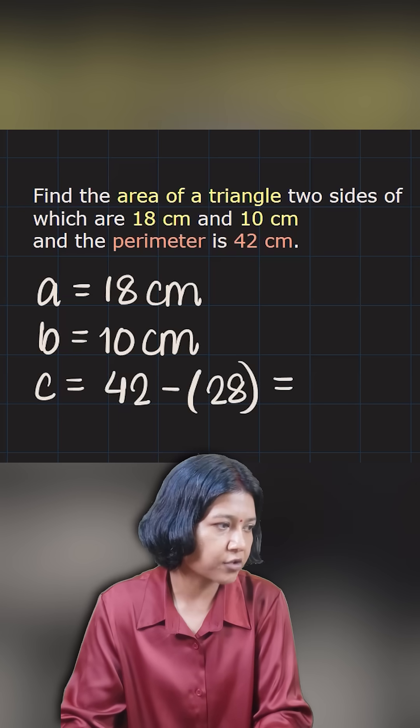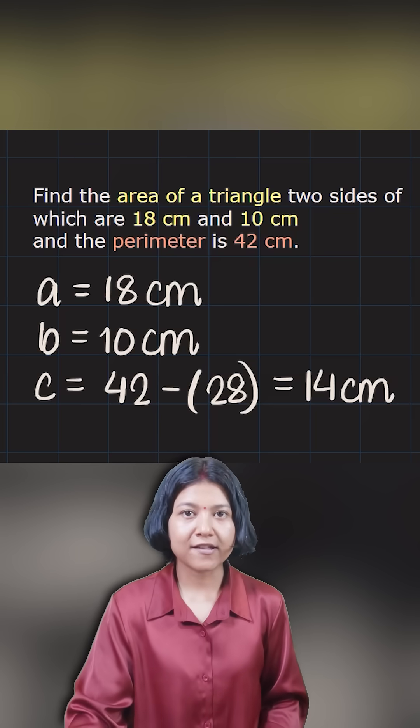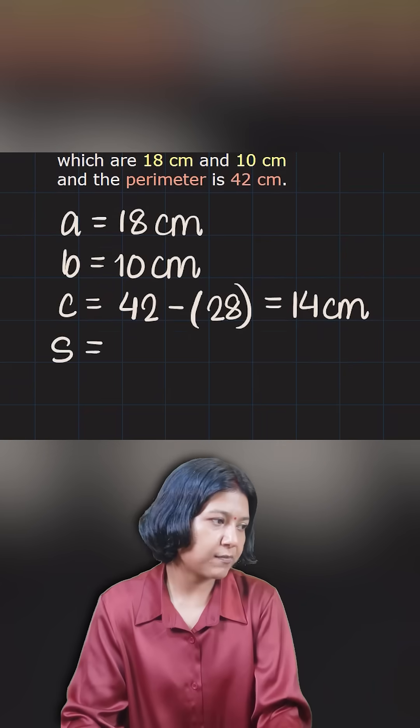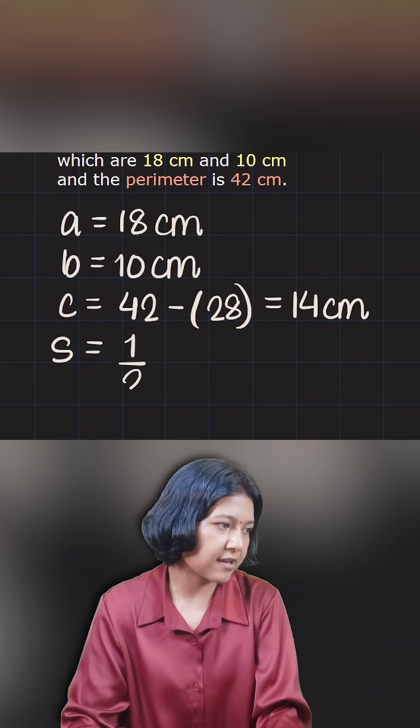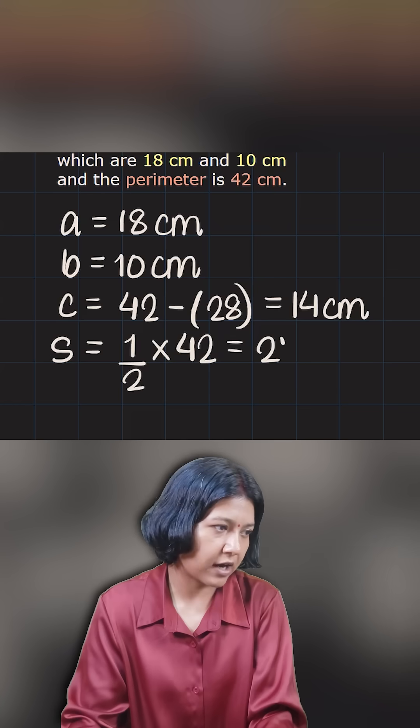And one thing you really need here is the semi-perimeter. Semi-perimeter is just half times the given perimeter, so half of 42 is just 21. This is called Heron's formula.